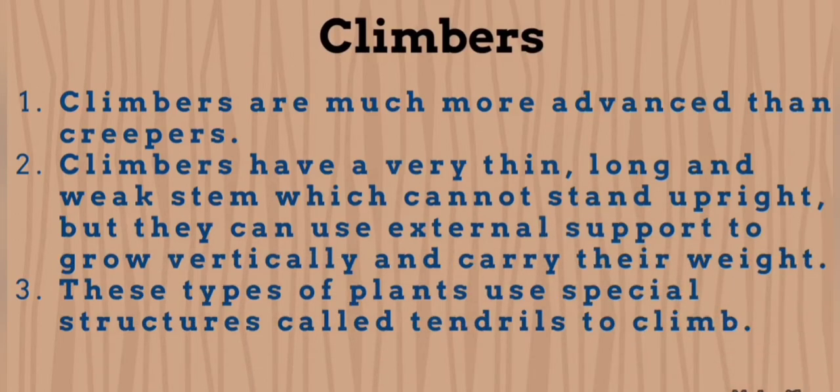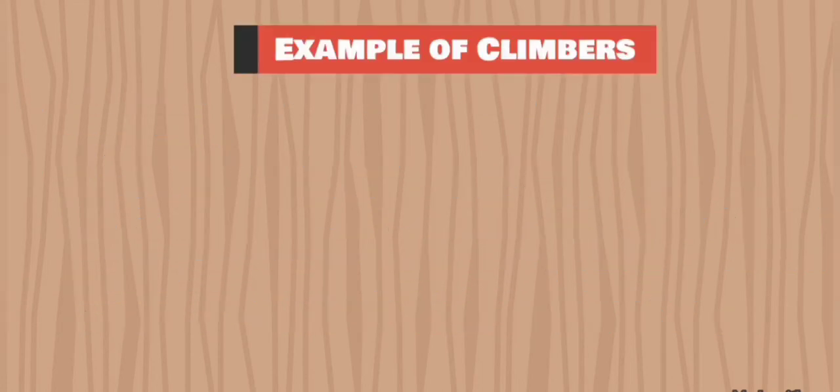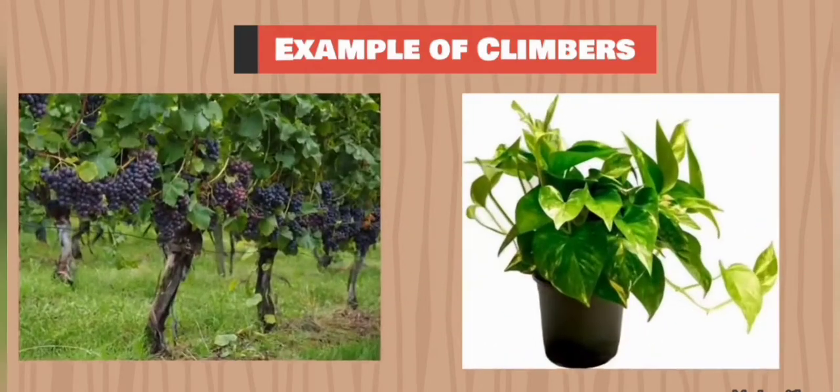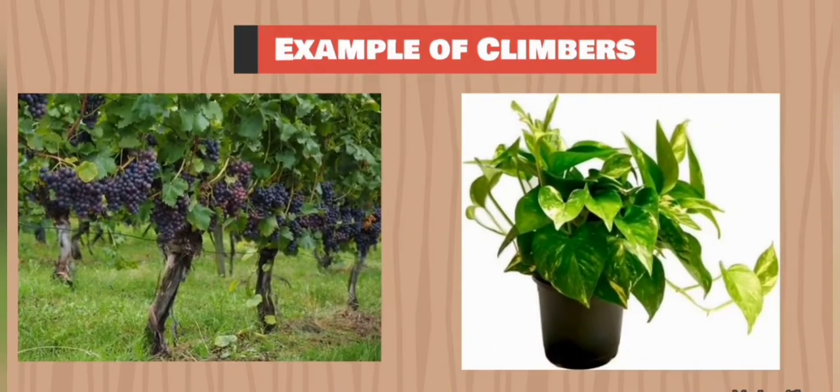Climbers are much more advanced than creepers. Climbers have a very thin, long, and weak stem which cannot stand upright, but they have external support to grow vertically and carry their weight. These types of plants have a special structure called tendrils to climb.